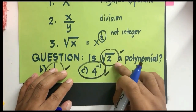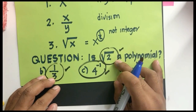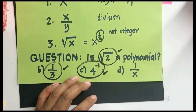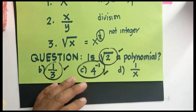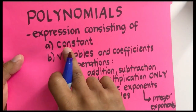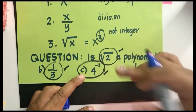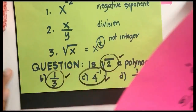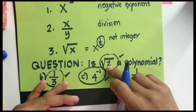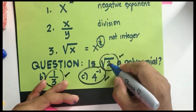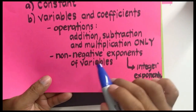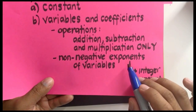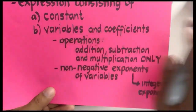Is the square root of 2 a polynomial? The answer is yes. You might ask why square root of x is not a polynomial but square root of 2 is. The reason is that all constants are polynomials, and the square root of 2 is a constant — its value is fixed. The non-negative integer exponent requirement applies only to variables, not to constants.